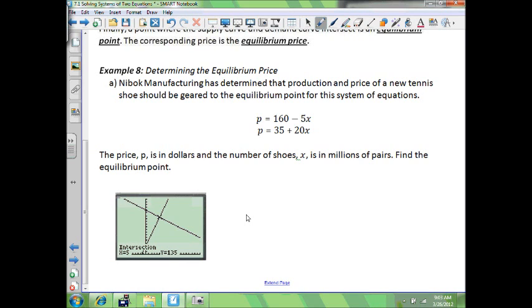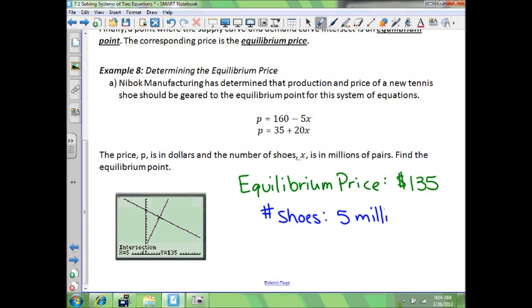So there is your intersection point. Equilibrium price is $135. The equilibrium number of shoes would be 5 billion. So they want to make 5 billion pairs of shoes and set the price at $135. That's all you're really doing here, you're finding where they intersect. It's another application of using systems of two equations.